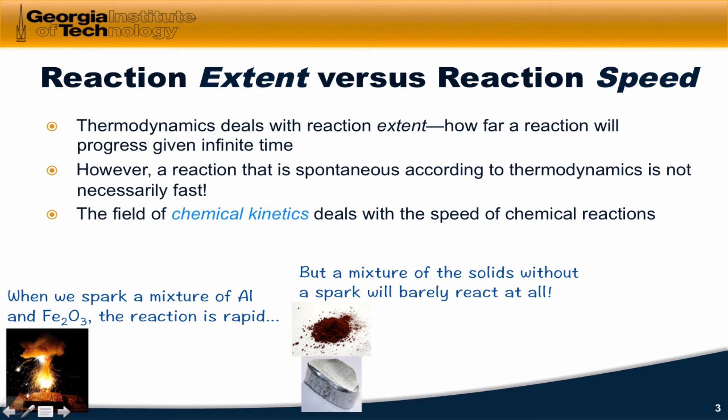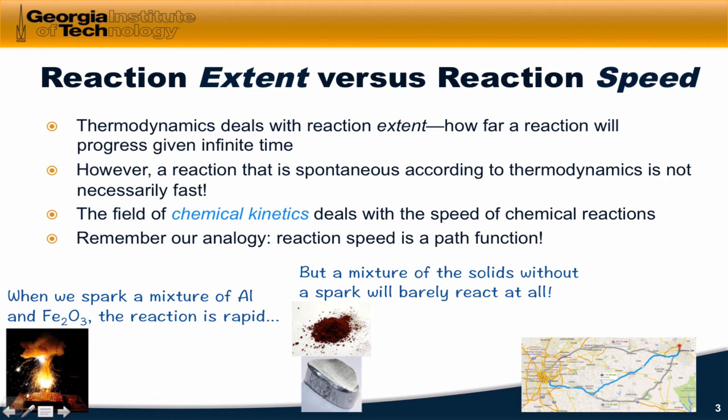The field that deals with this reaction speed issue is called chemical kinetics. Remember our analogy from thermodynamics of the Athens to Atlanta trip. We noted that one of the path function variables, one of the variables that depended on the path taken, was the time required to go from the starting point to the end point. The same is true in chemical kinetics. Rate, because it depends on the time required to complete a reaction, is a path function. Because it's a path function, we need to go beyond thermodynamics to appreciate reaction speed. That's where chemical kinetics comes in.